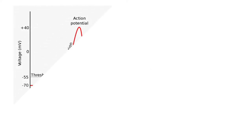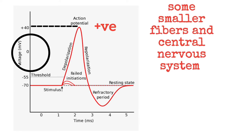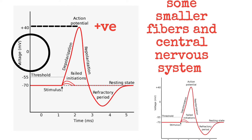In large nerve fibers, the great excess of positive sodium ions moving to the inside causes the membrane potential to actually overshoot beyond the zero level and to become somewhat positive. In some smaller fibers, as well as in many central nervous system neurons, the potential merely approaches the zero level and does not overshoot to the positive state.